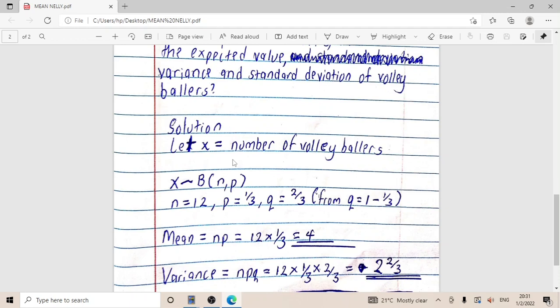The solution: let x equal the number of volleyball players, whereby if x is a binomial distribution having n trials and probability of success, that means in the question n is 12.